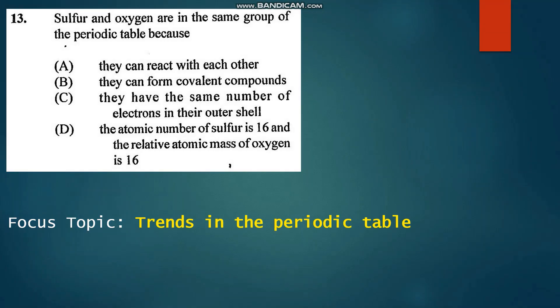Number 13: Sulfur and oxygen are in the same group of the periodic table because... In the periodic table, elements are placed in groups based on the number of electrons in their outer shells. And so we have C: same number of electrons in their outer shell.